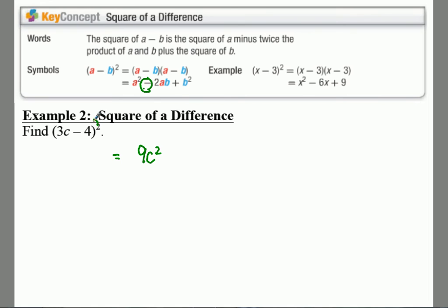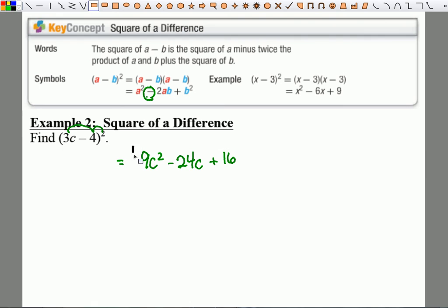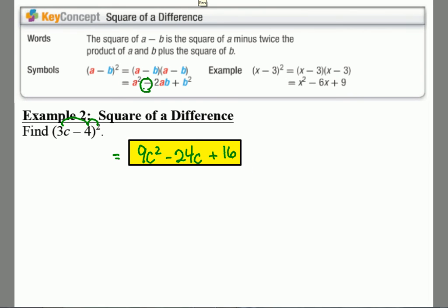Your middle term is 2 times negative 4, which is negative 8. Negative 8 times 3, which is negative 24c. And then your last term is just negative 4 squared, or 16. I love me some shortcuts. That is how you find the square of a difference using the shortcut.